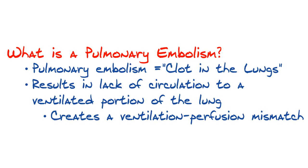One of the small branches off the pulmonary artery gets clogged up by this clot. So those alveoli that are getting oxygen when you take a deep breath are not able to transport that oxygen to the surrounding vessel, because the clot is blocking off blood flow. This results in what's called a ventilation-perfusion defect — you have part of the lung getting oxygen, but the blood vessel surrounding the alveoli has no blood flow through it.